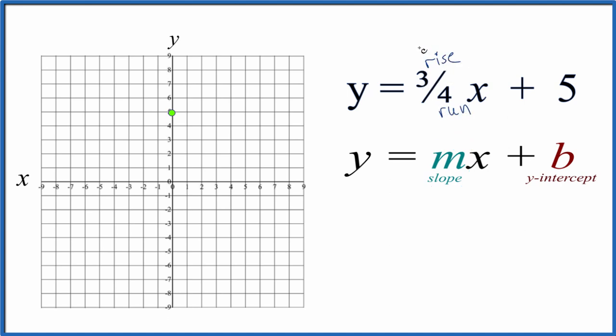So we rise 1, 2, 3, and run 1, 2, 3, 4. So we go to our y-intercept. We rise 1, 2, 3, and then we run 1, 2, 3, 4.